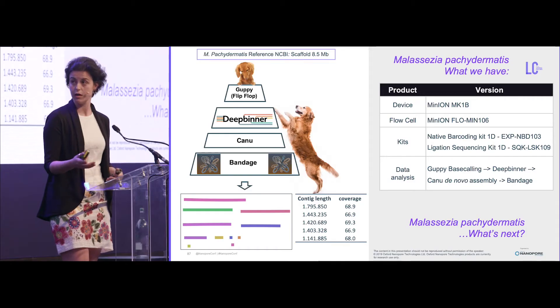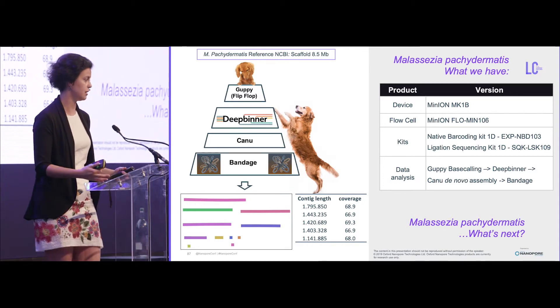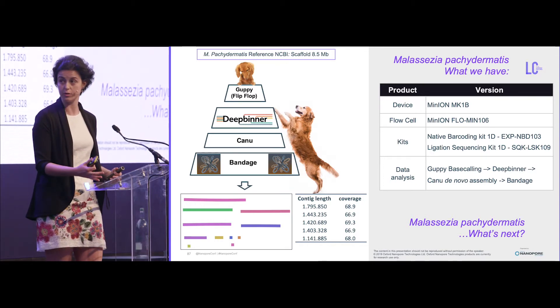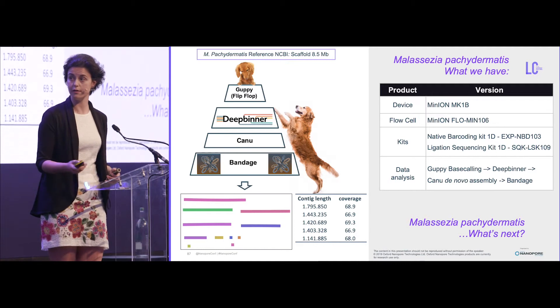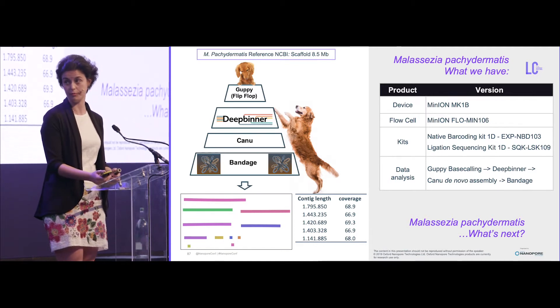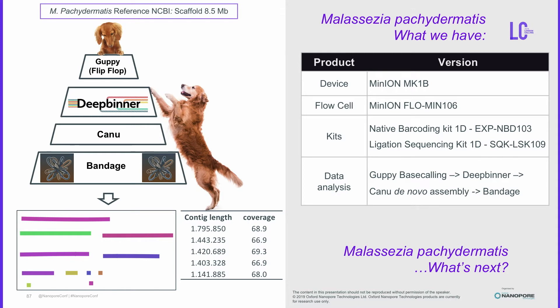Since pachydermatis is really important in the skin of dogs, we want to go for whole genome sequencing. Until now we have done the assembly with Guppy flip-flop basecalling, Deepbinner, and Canu, and we obtained contigs — the longest ones are shown here — and the next step will be to complete this genome.